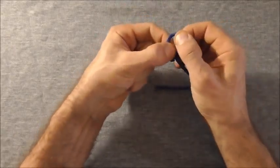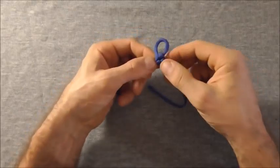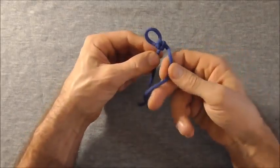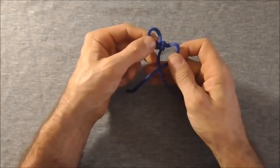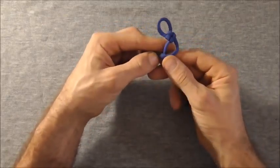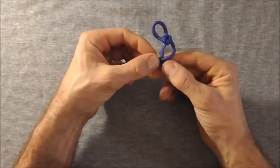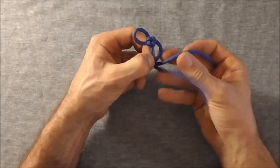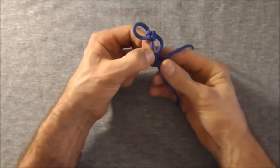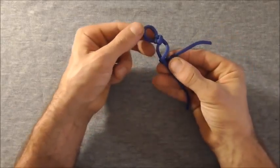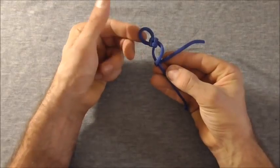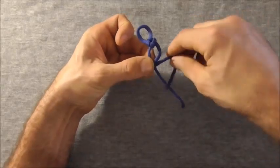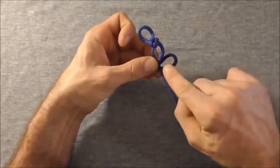And then once we've done one of these box knots we just need to repeat the process. So we'll take the right hand strand over the left, come in behind, then tuck it behind again to form a loop down here at the bottom.